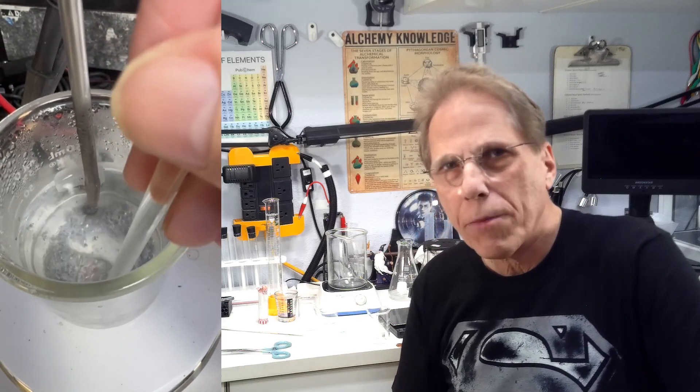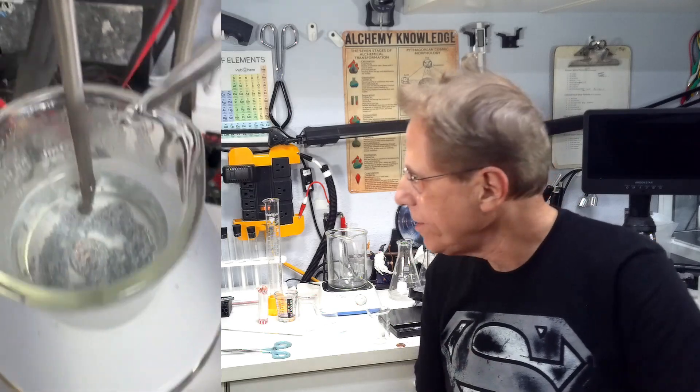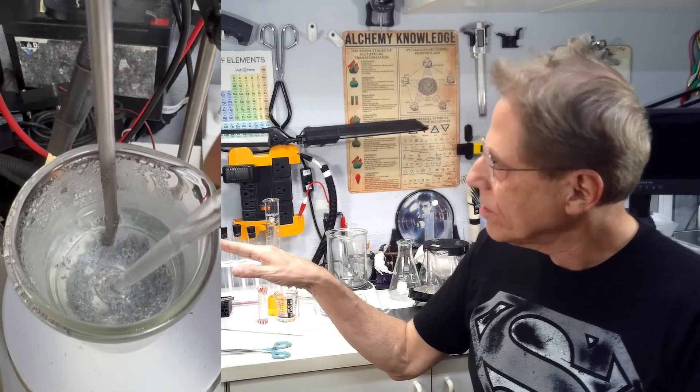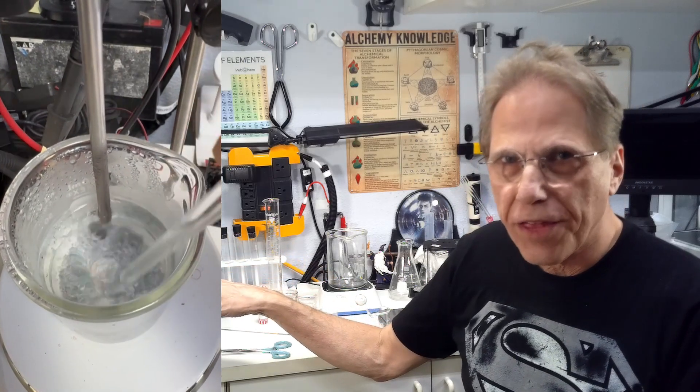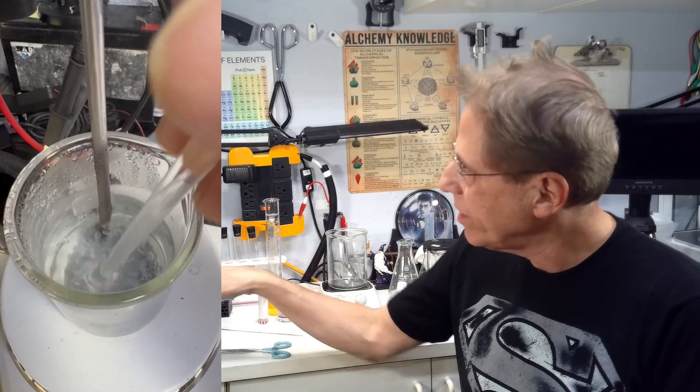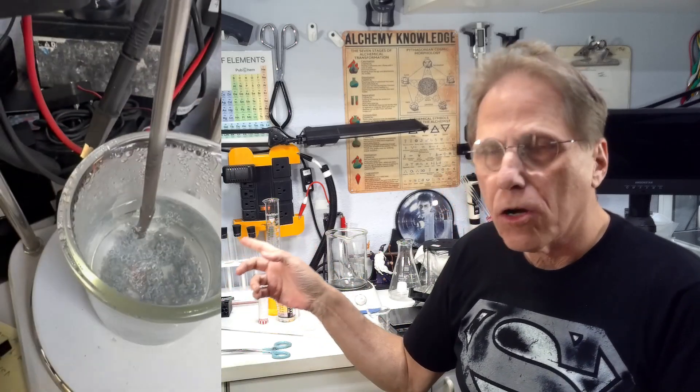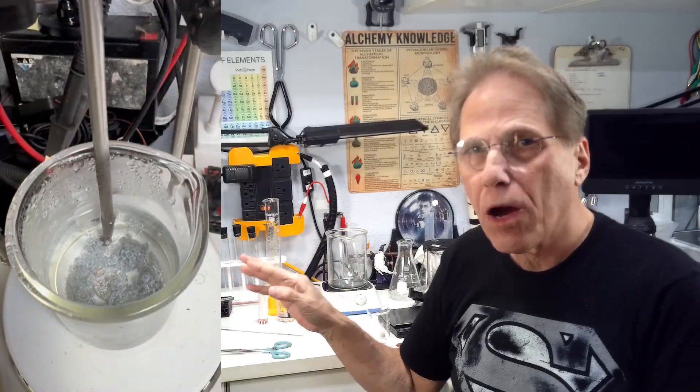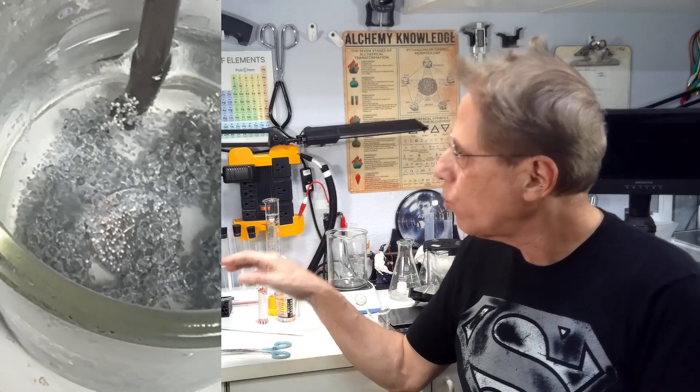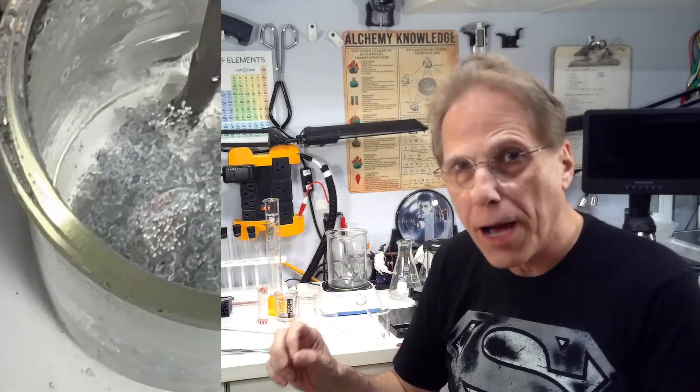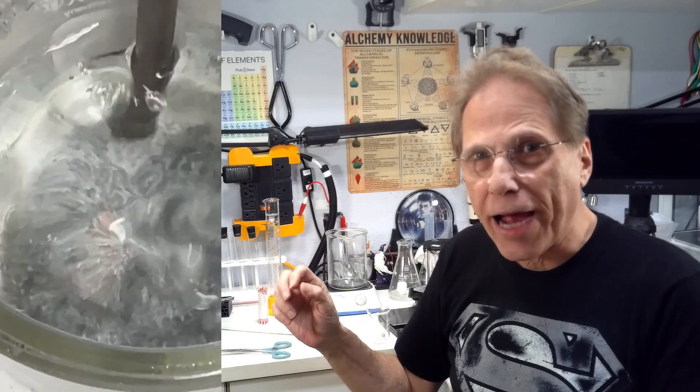Well, that penny is being coated. Let's talk about the chemistry behind what's happening here. We got zinc chloride in there and we have zinc metal filings. Now, what's happening is the zinc chloride is providing the ions, the zinc ions that will attach itself to the copper penny.